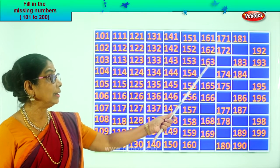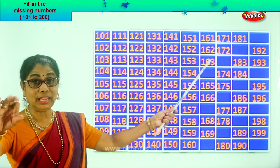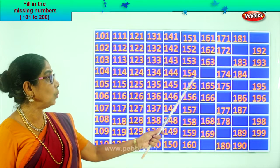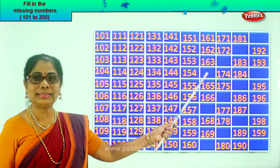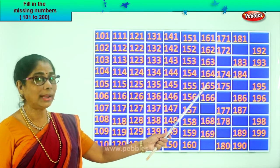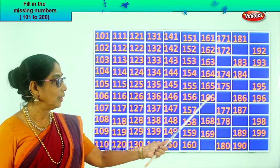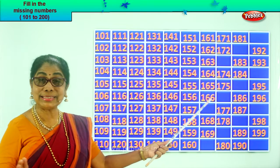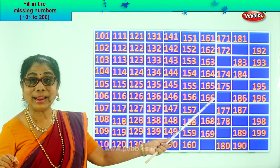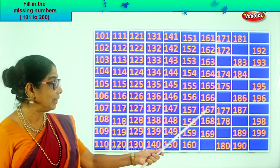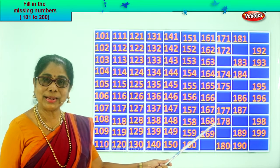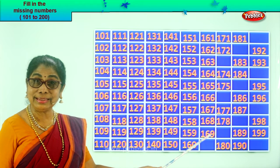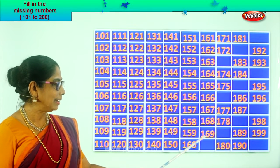162, 163. After 3, 4. After 63, 64. So 164. 165, 166. After 6, 7. After 66, 67. 167. Next: 168, 169. After 69, 70. 170.